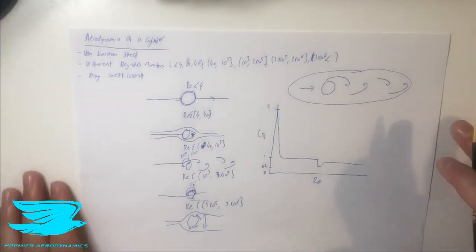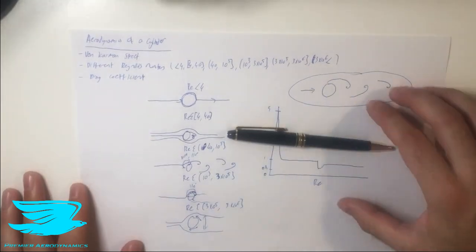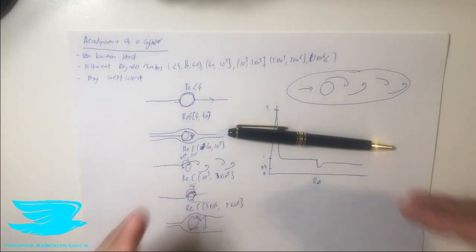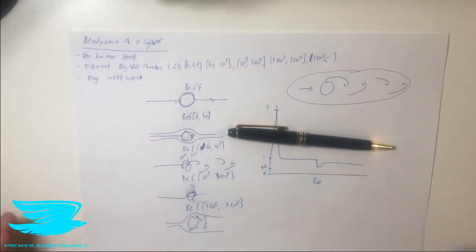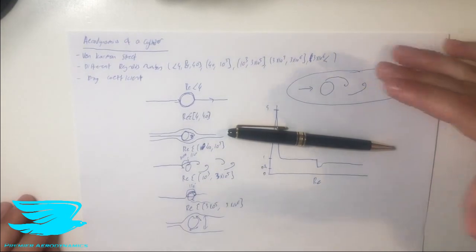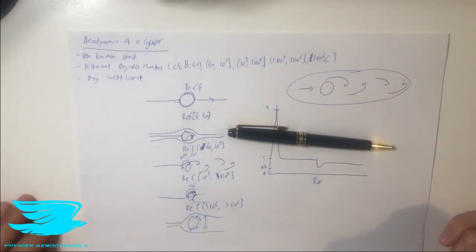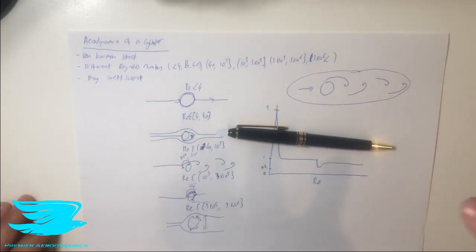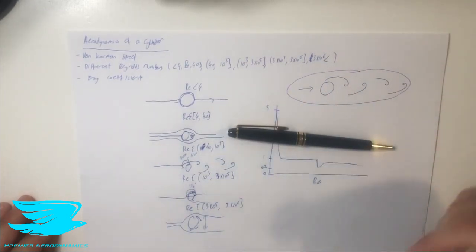That is the aerodynamics of a cylinder. If you like this, make sure to like it, and if you want to see more videos like this click subscribe. If you want to learn more, check out the book 'Fundamentals of Aerodynamics' by John D. Anderson — we've linked it in the description. We also have courses on theory and CFD, and if you're doing experiments in aerodynamics check out the Hemisphere Hawk instrument we make to improve accuracy. See you next video — peace out amigos!